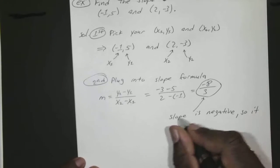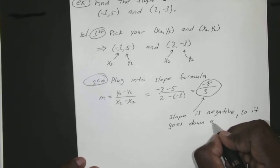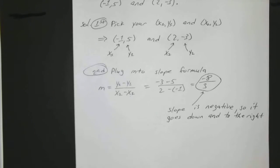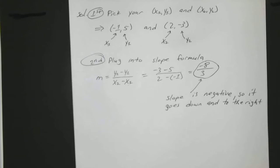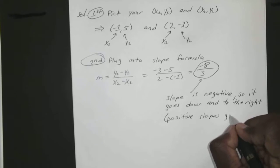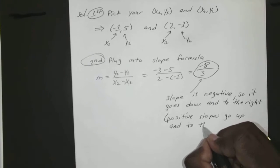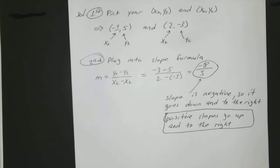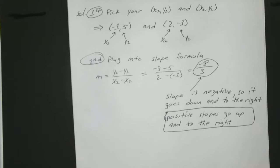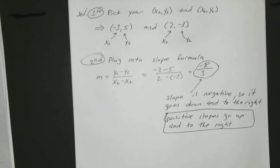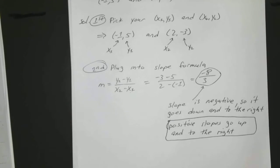Okay, so this slope lets you know it's negative so it goes down and to the right. Now if it were positive it would go up and to the right. Positive slopes go up and to the right. Any questions on that one? Or hopefully it kind of looks familiar.